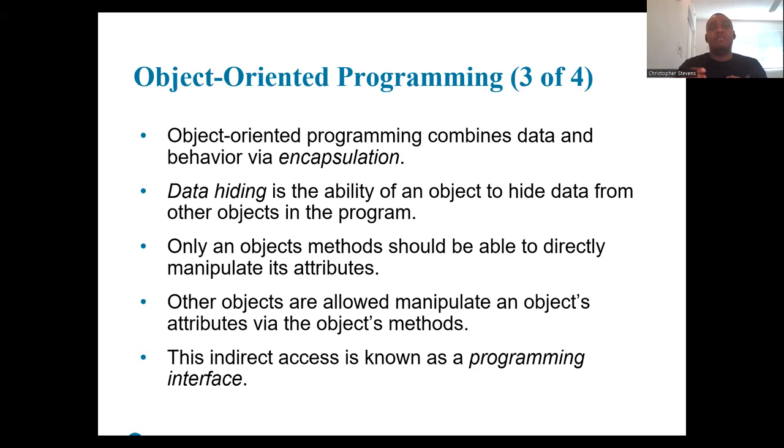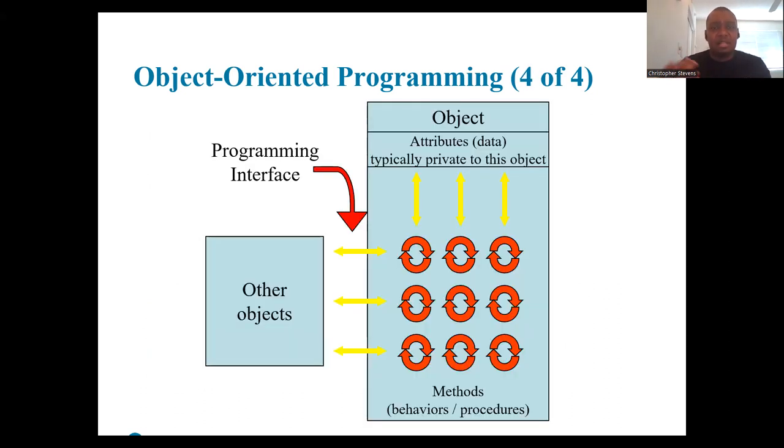Encapsulation combines the data and behavior in one entity. Data hiding means objects hide their data from other objects. The programming interface consists of methods that allow indirect access to objects' attributes. OOP helps manage complexity by keeping data and behavior bundled together, which promotes better organization and modularity.